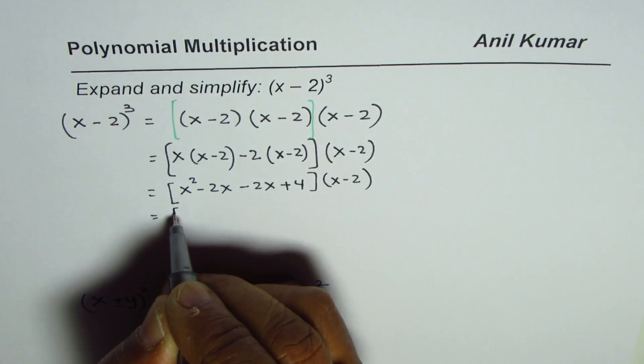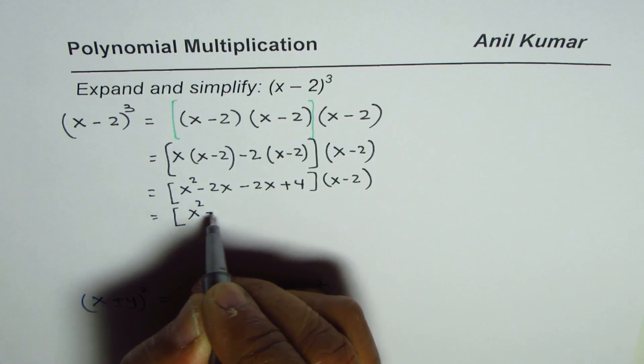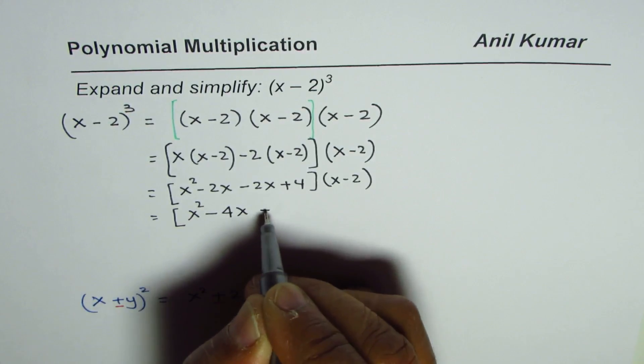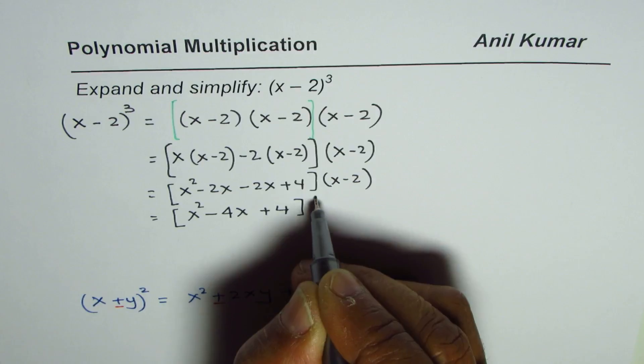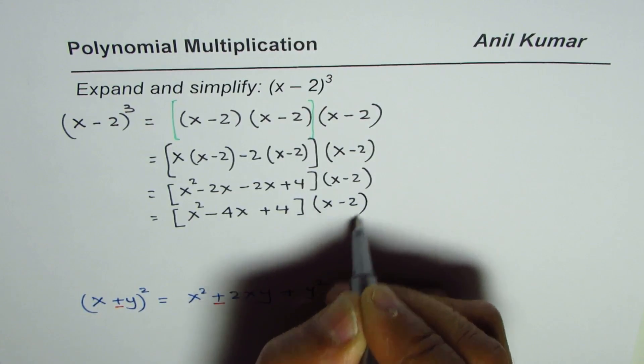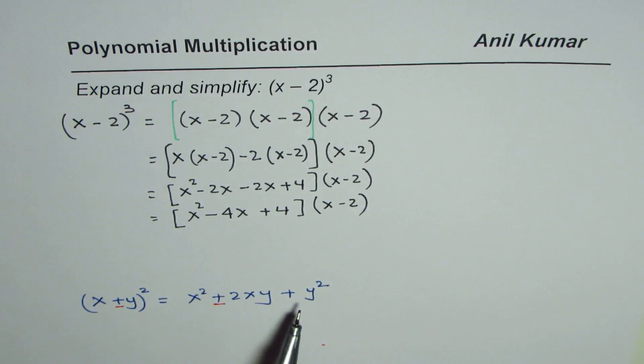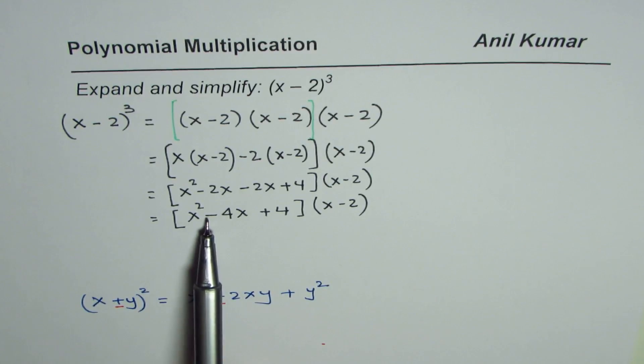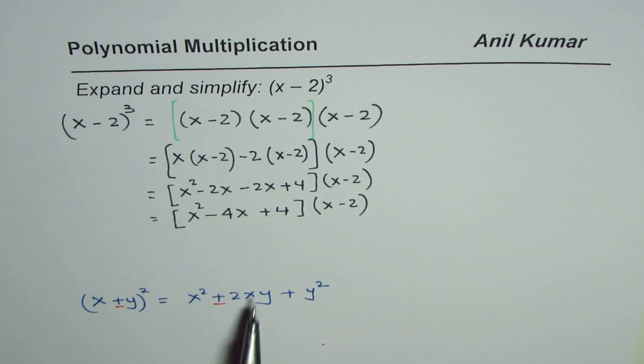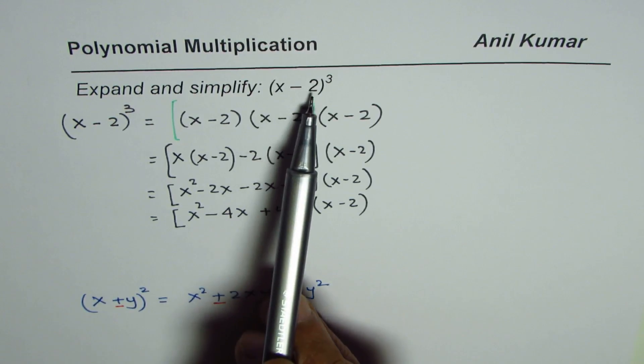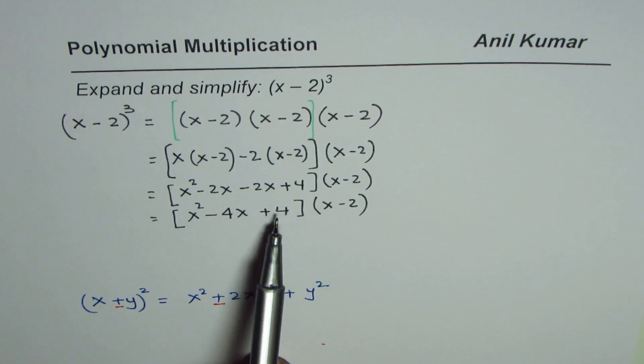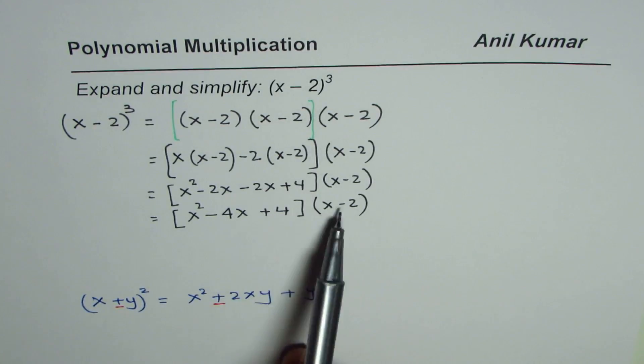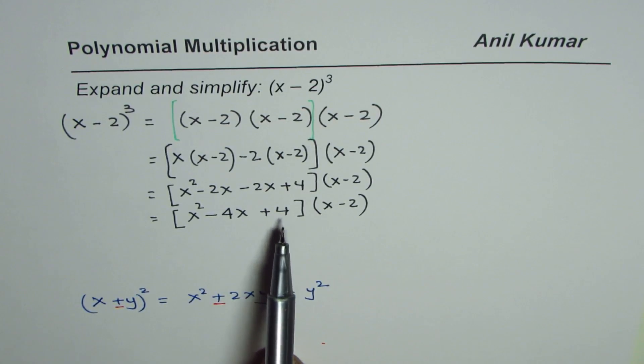And that is x square minus 4x plus 4 times x minus 2. If you would have applied the formula, x square, the term with negative coefficient, 2 times ab, 2 times x times 2, which is minus 4. And y square is 2 square, which is 4. You could have got it directly also.